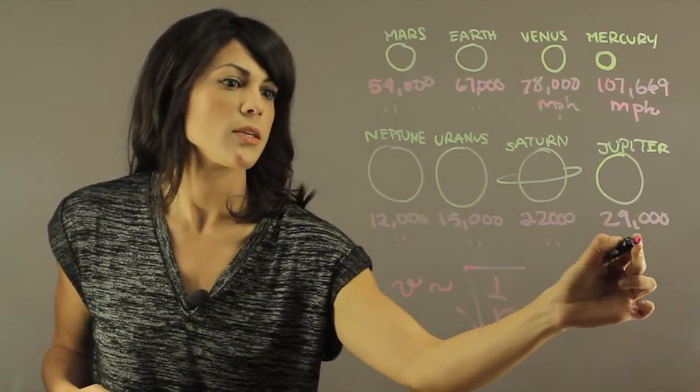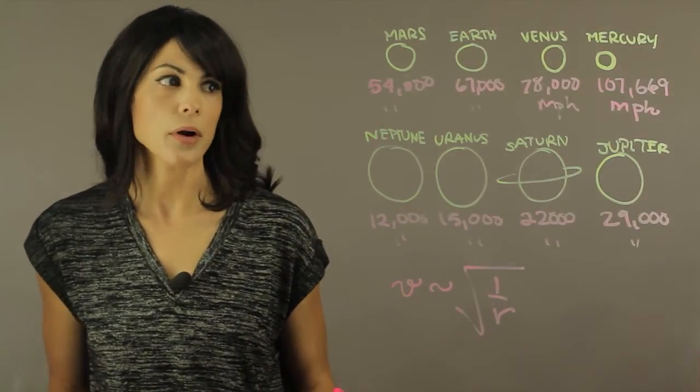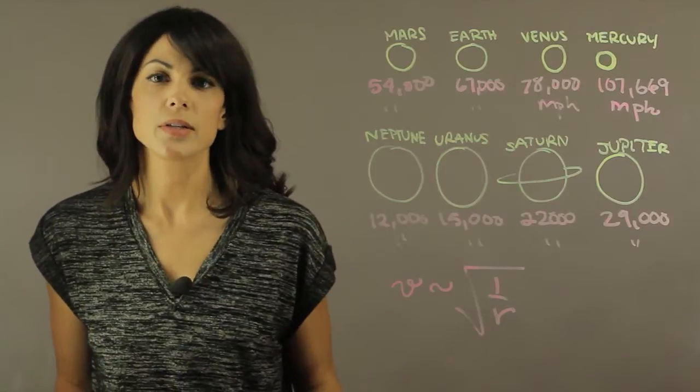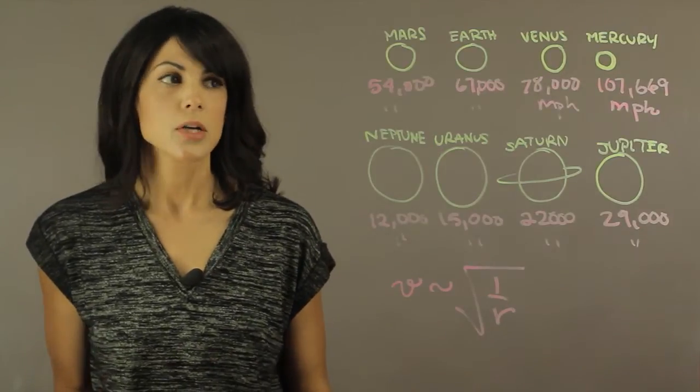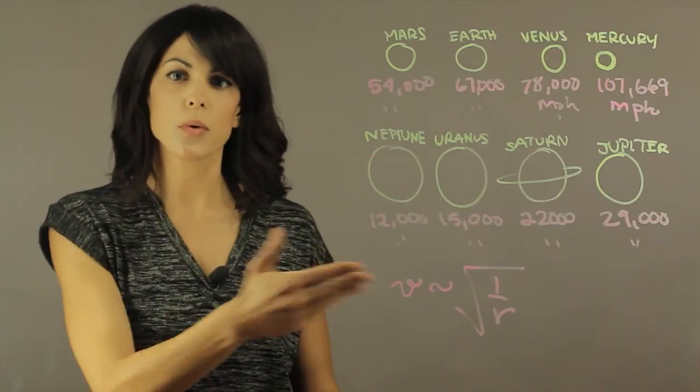So as you can see, Neptune, the furthest planet from the Sun, is going 12,000 miles per hour. When Mercury is going 107,000 miles per hour. So that means that, as you can see, it's increasing as it moves towards the Sun.